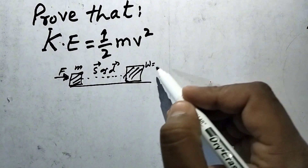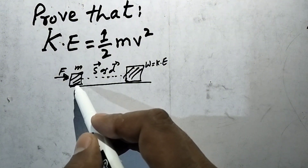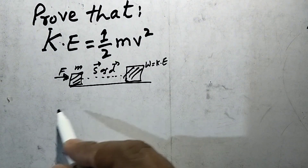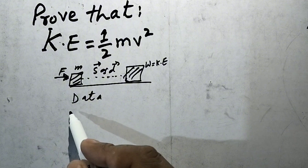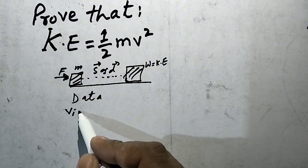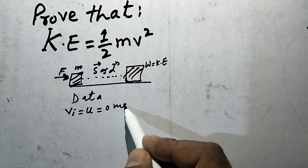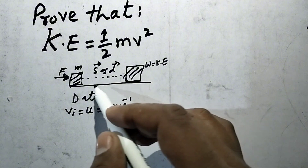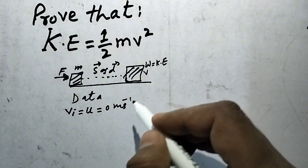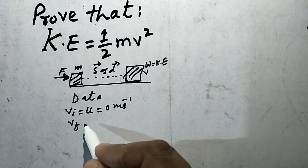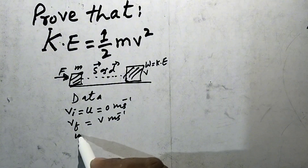Work will be done here in the form of kinetic energy. Since initially the object is at rest, we form our data: initial velocity Vi, or U, is equal to 0 meters per second. After covering some displacement, it attains a final velocity VF equal to V meters per second, and we have to calculate the work done.